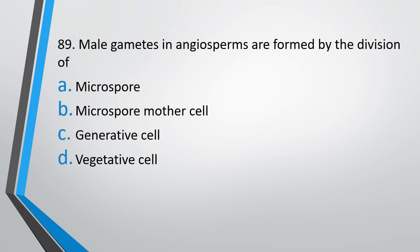Question number 89: Male gametes in angiosperms are formed by the division of — microspore, microspore mother cell, generative cell, or vegetative cell. The correct answer is option C, by the division of the generative cell.